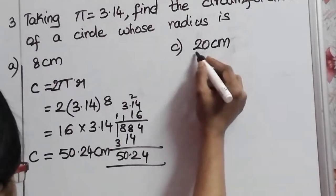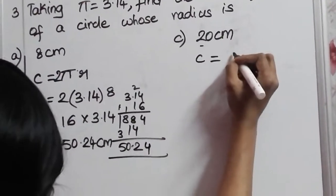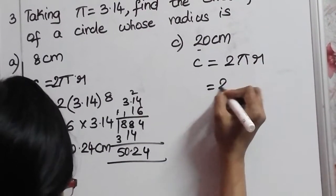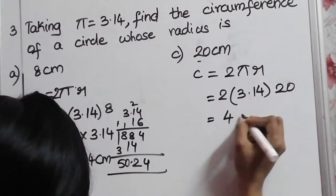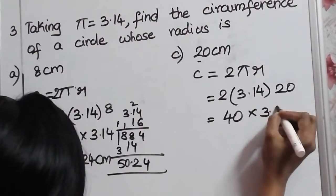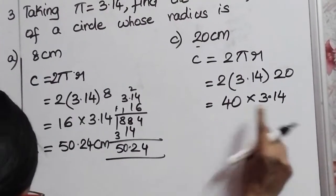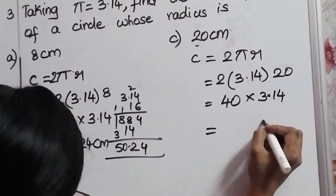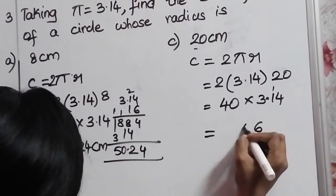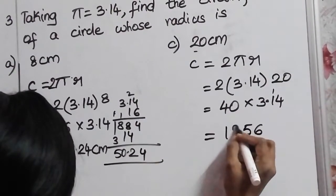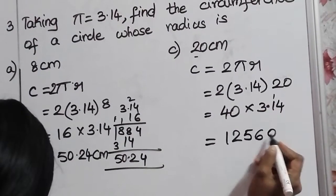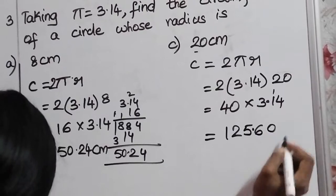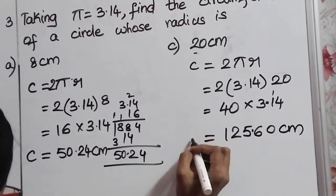Now, the C bit: radius is 20 centimeters. C = 2πR = 2 × 3.14 × 20. First, 2 × 20 = 40. Then 40 × 3.14: since there is a 0, we directly multiply 4 × 3.14. 4 × 4 = 16; 4 × 1 = 4 (plus carry = 5); 4 × 3 = 12. With the trailing zero, after 2 decimal digits, the circumference is 125.60 centimeters.